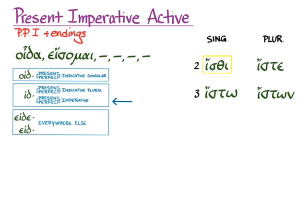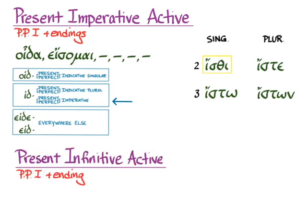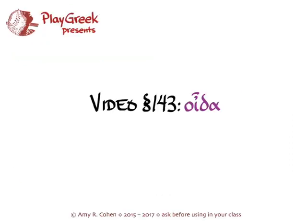The present infinitive active is going to look familiar in a perfect sort of way because the ending that we're going to use is the one you learned as the perfect infinitive active when you first learned the perfect tense. And so what we'll get when we choose the everywhere else stem is eidenai. And that's the whole conjugation of the words that we get from the first principal part of oida, a very common and very important word in Greek.